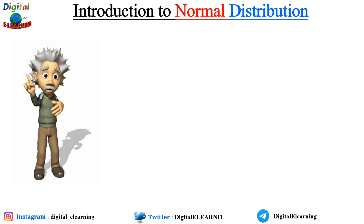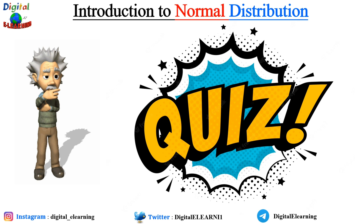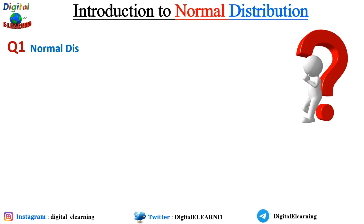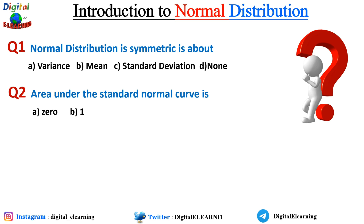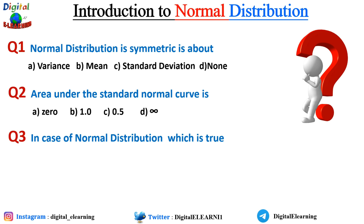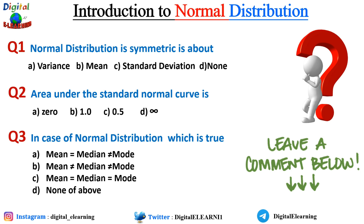Now let's have a quick quiz to see how much you know about normal distribution — three questions you can answer in the comment section below. Question 1: What does Z represent — variance, mean, standard deviation, or none of these? Question 2: The area under the standard normal curve is — 0, 1, 0.5, or infinity? Question 3: In the case of normal distribution, which is true — mean equals median not equal to mode; mean not equal to median not equal to mode; mean equals median equals mode; or none of these? Leave your answers in the comments.